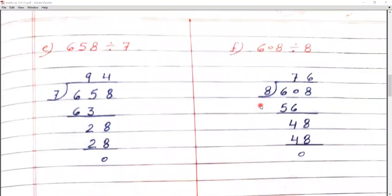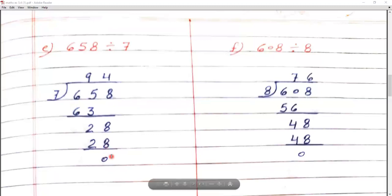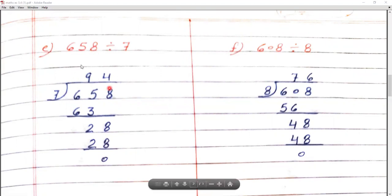Question number E: 658 divided by 7. We use the 7 times table. Since 6 is smaller than 7, we make a pair: 65. 7 nines are 63. 65 minus 63 is 2. We bring down 8 to make 28. 7 fours are 28. 28 minus 28 is 0. The answer to 658 divided by 7 is 94.